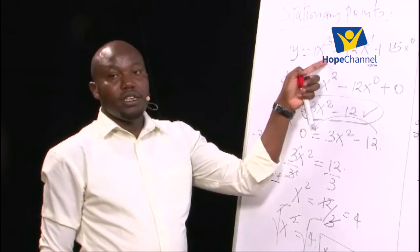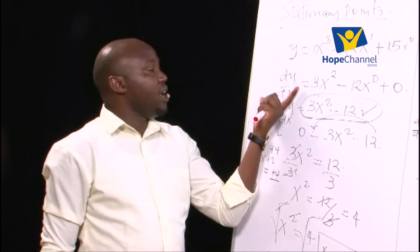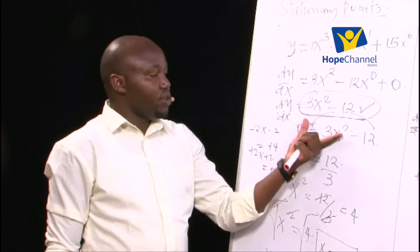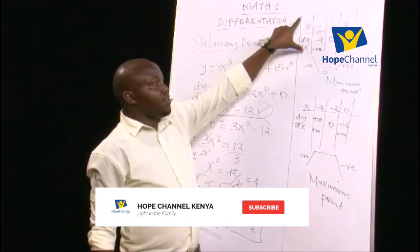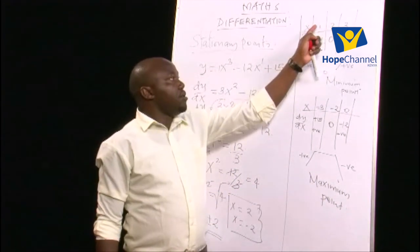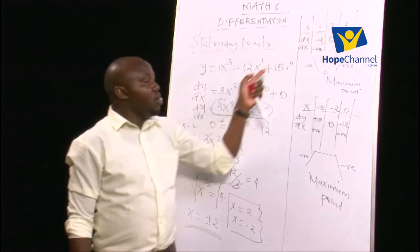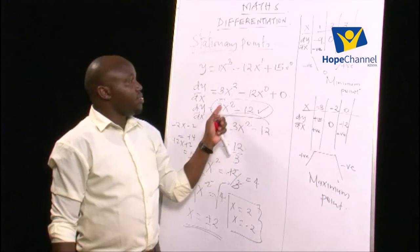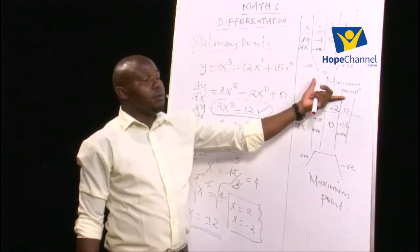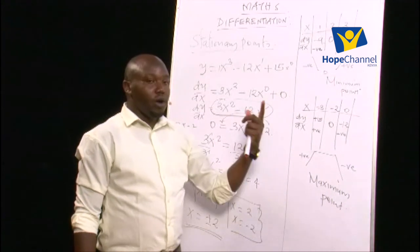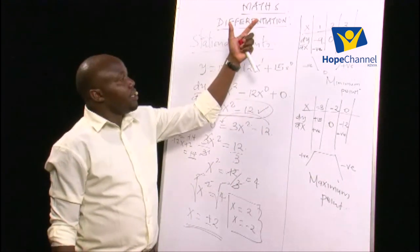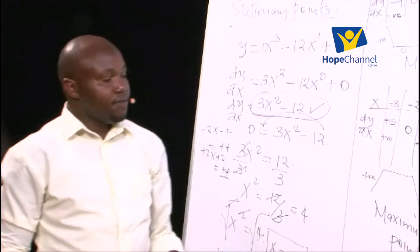All these follow the same procedure: first differentiate to get the gradient function, equate it to zero (the rule for stationary points), solve for x, then use those x-values in a sign table — substituting numbers slightly above and below into the gradient function. Once you get the sign pattern, you can determine if it's a minimum, maximum, positive inflection, or negative inflection.